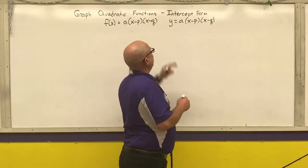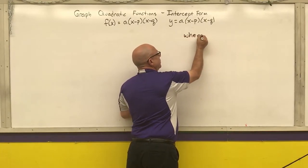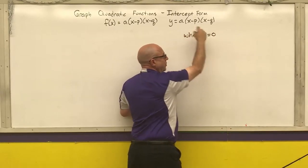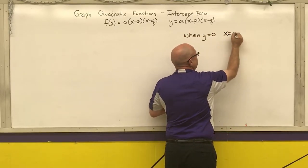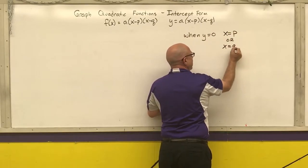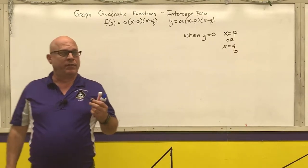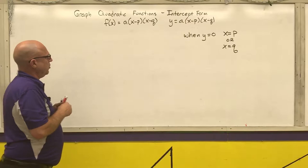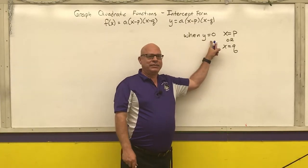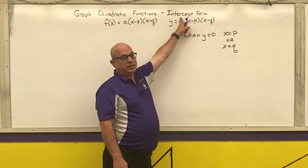So the key points for the intercept form is when y is zero, x is the opposite of that number, or x is the opposite of that number. And you should remember from the general graphing that when y is zero, you are finding your x-intercepts. That is why this is called the intercept form.